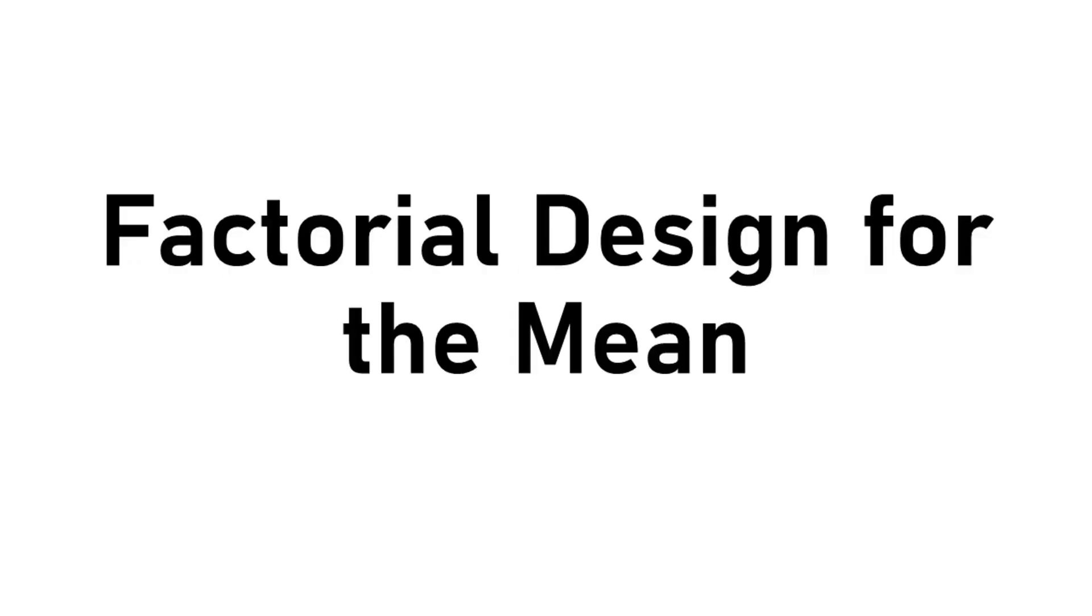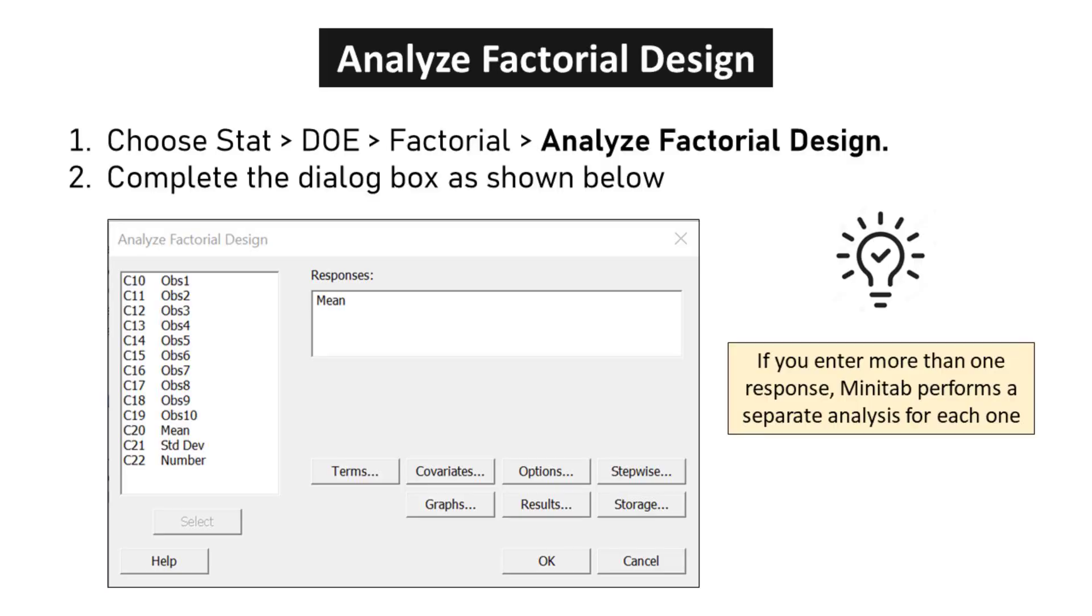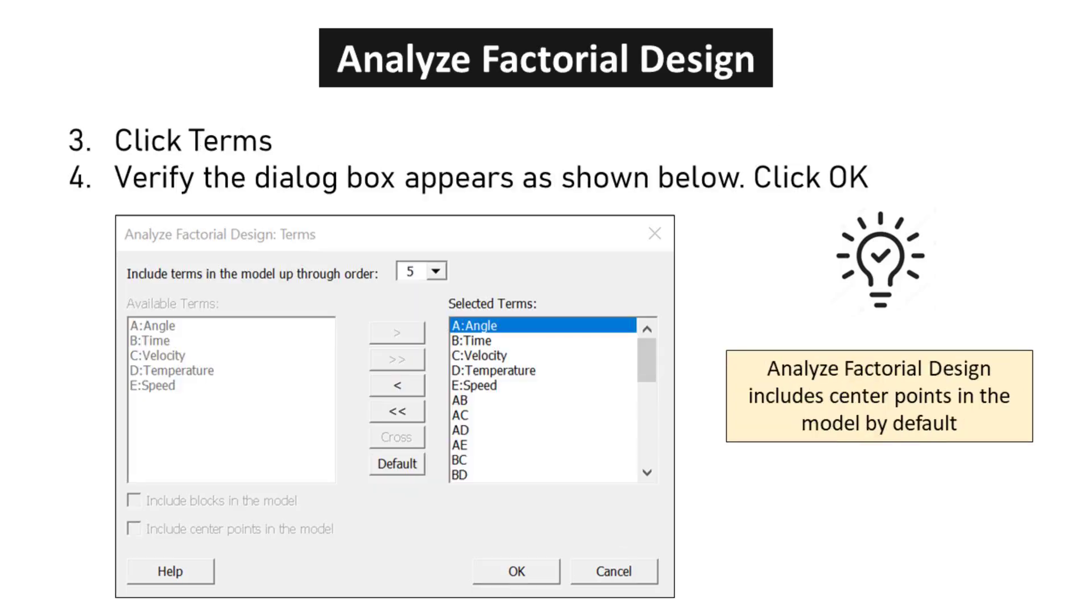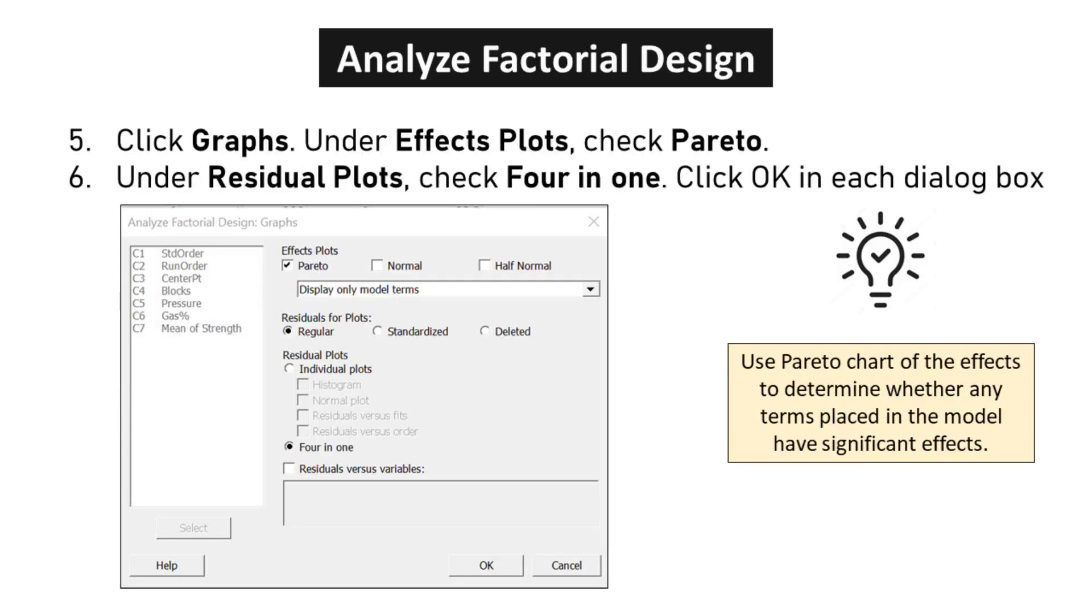Factorial design for the mean: Choose STAT, DOE, factorial, Analyze factorial design. Complete the dialog box as shown below. Click Terms. Verify the dialog box appears as shown below. Click OK. Click Graphs. Under Effects Plots, check Pareto. Under Residual Plots, check 4 in 1. Click OK in each dialog box.